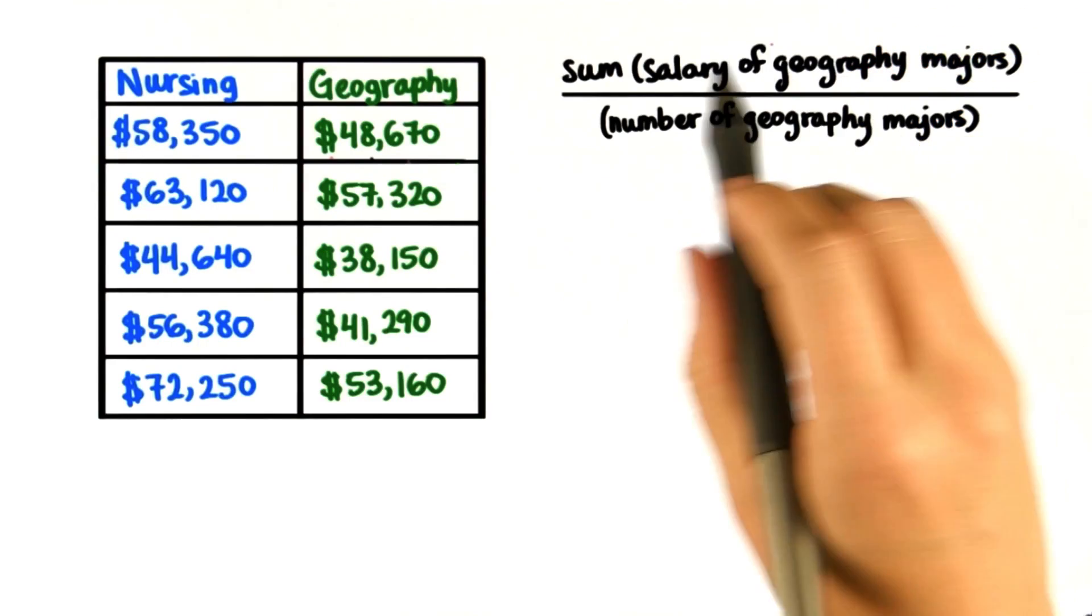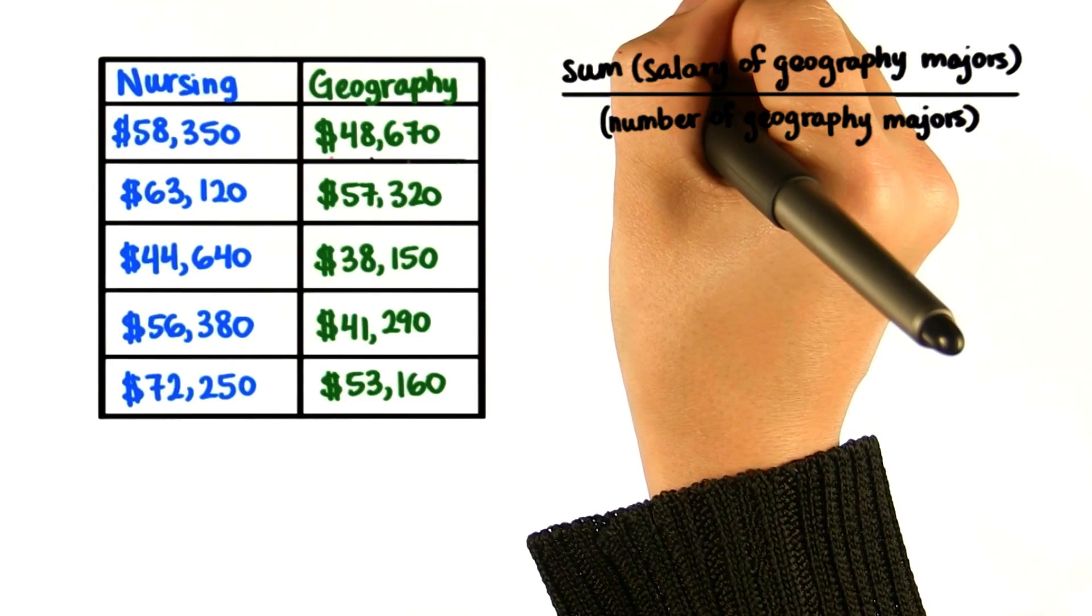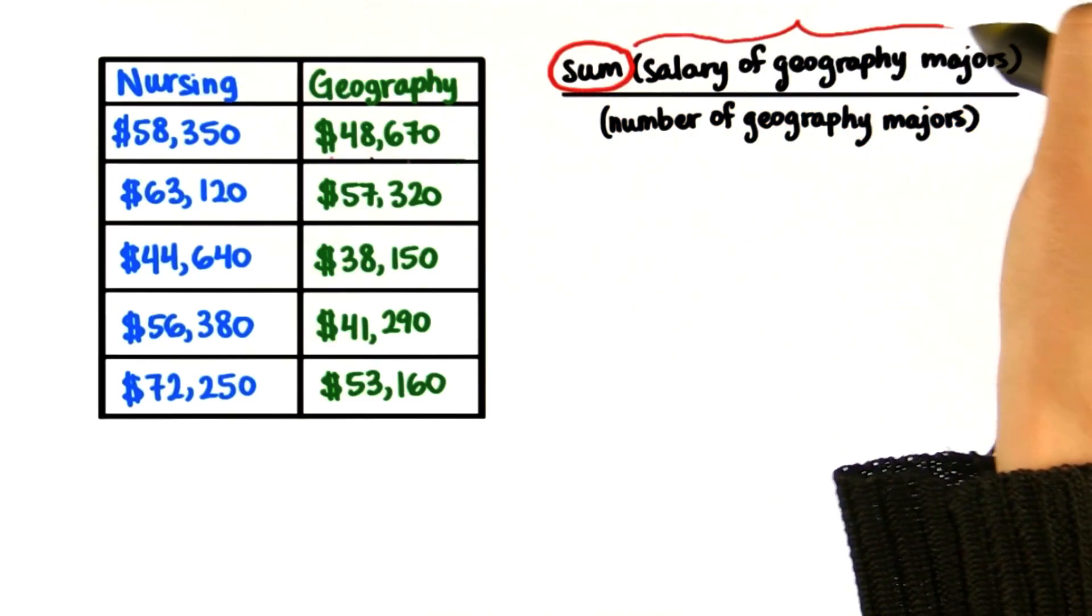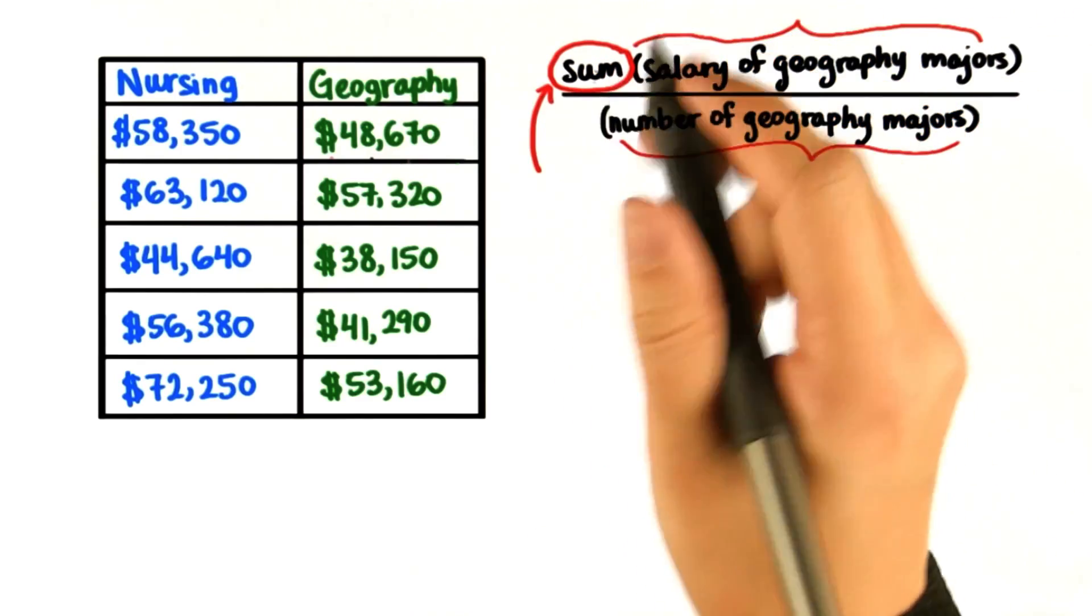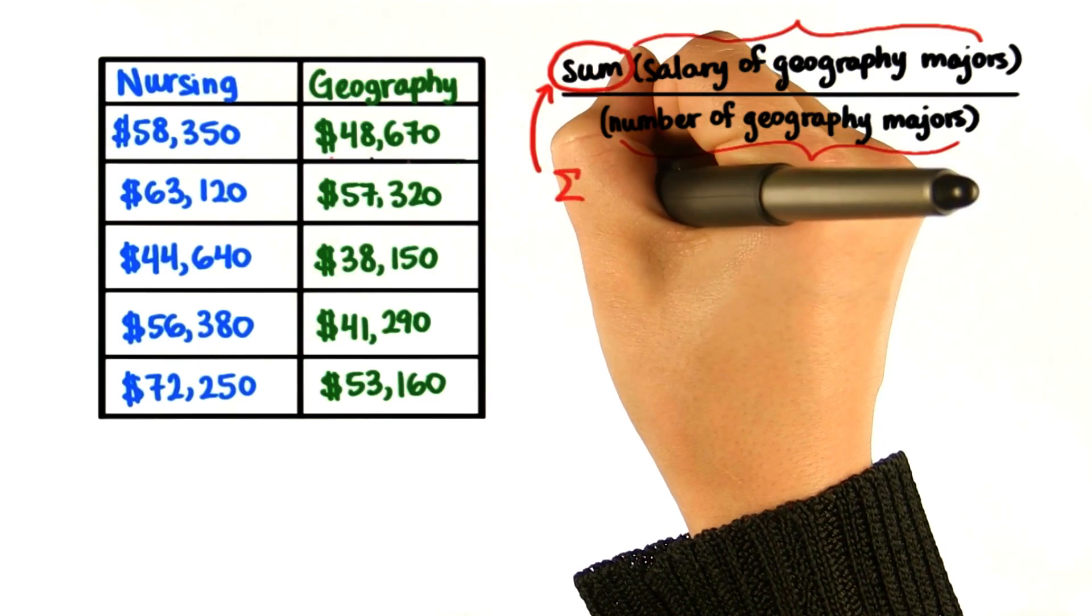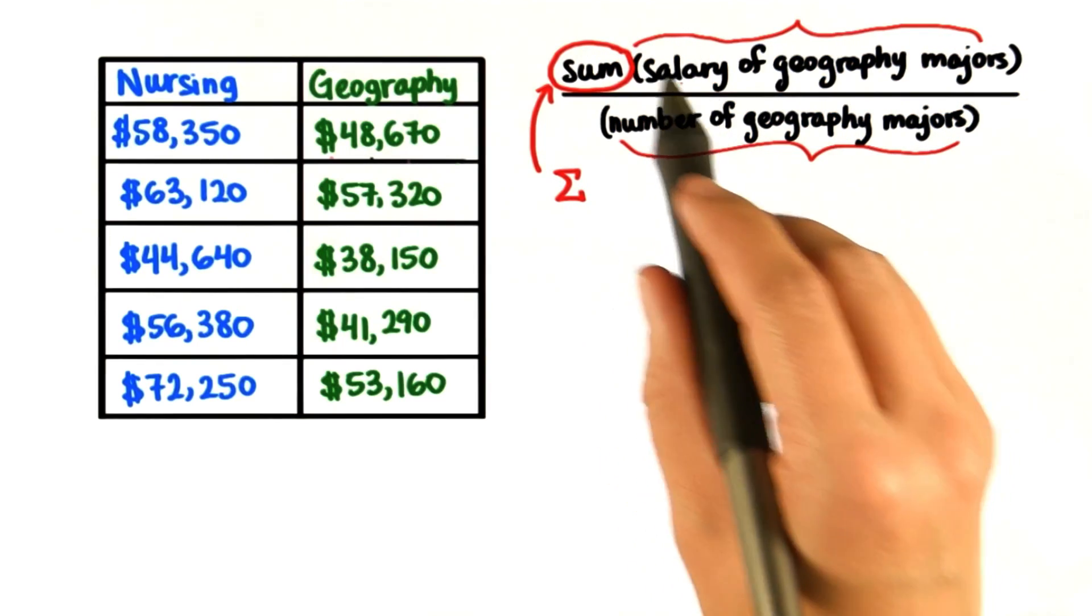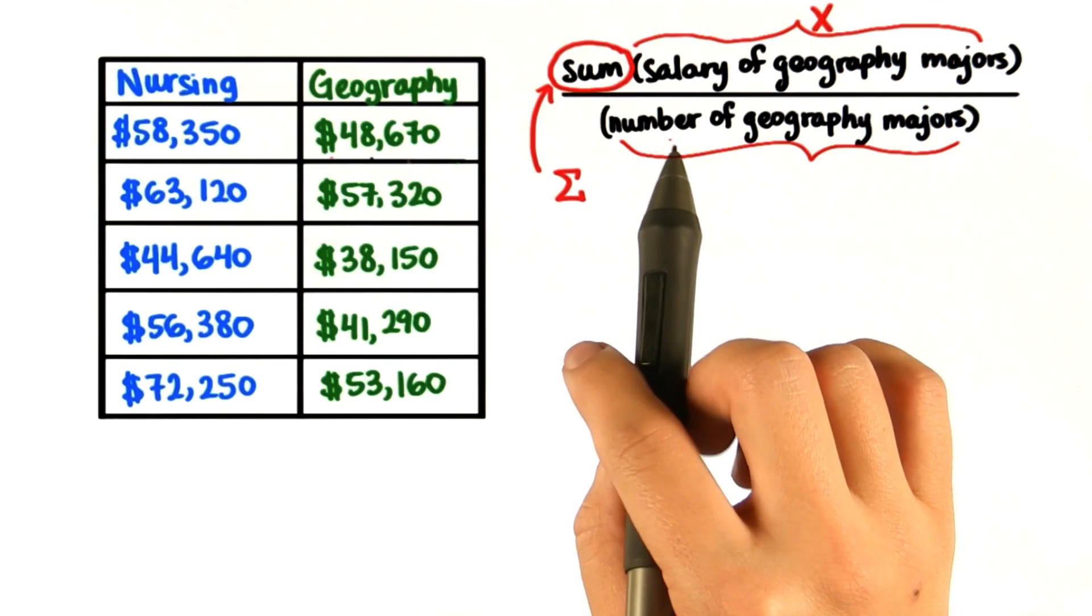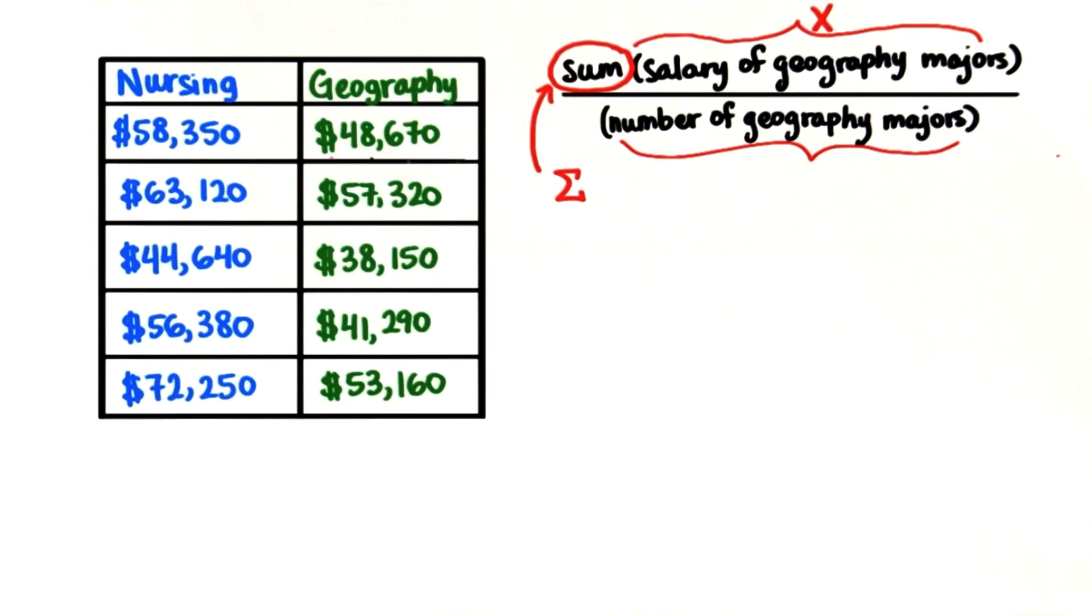And in fact, we can simplify this even further by replacing this with a special symbol and replacing these with something shorter. The symbol we'll use for sum is this, sigma. And instead of writing out the whole salary of geography majors, we'll just call this x. And instead of writing out number of geography majors, we'll just call this n for number.